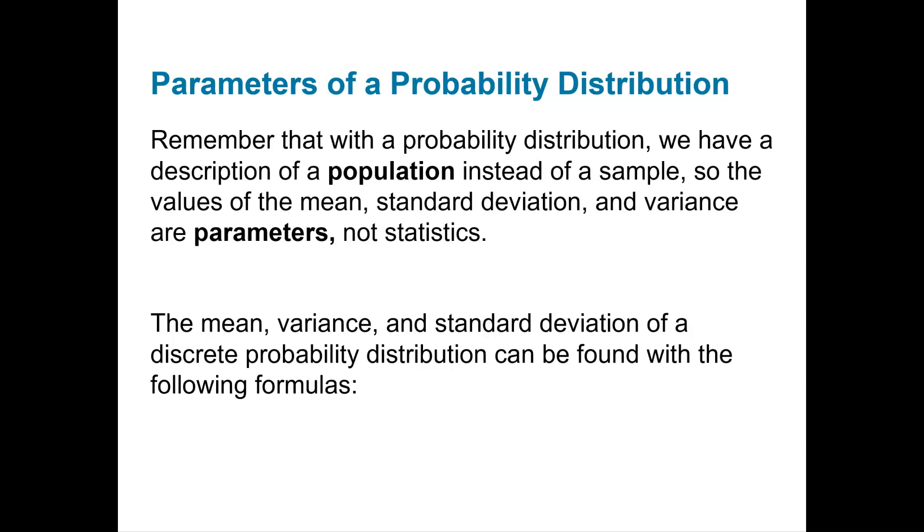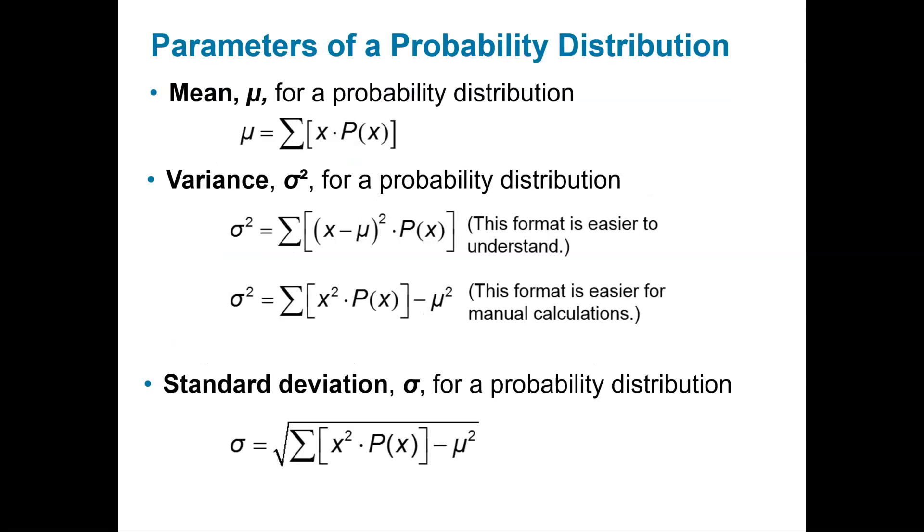When we're looking at a probability distribution, we are looking at population data, which means we're talking about the parameters, not the statistics. We can find the mean, variance, and standard deviation with the following formulas: mean, or μ, because we're talking about population here; σ² for variance; and σ for standard deviation. We're going to build a probability table to determine these items.